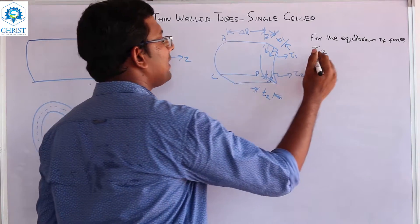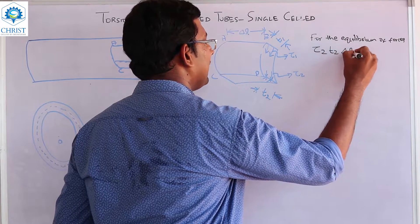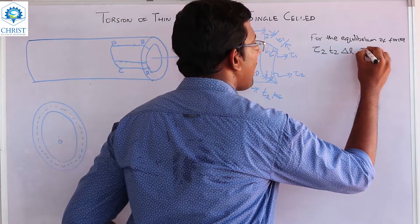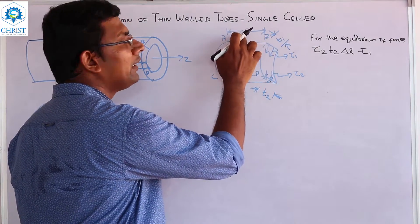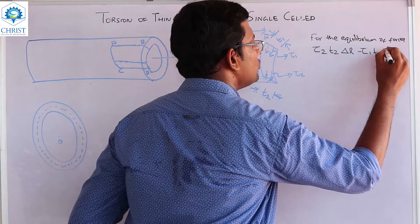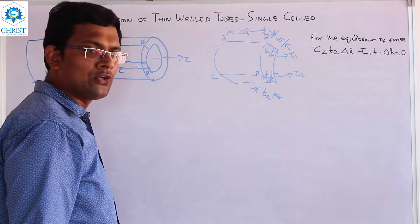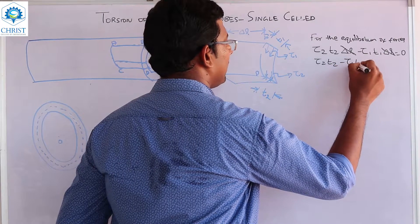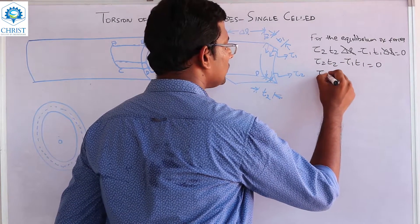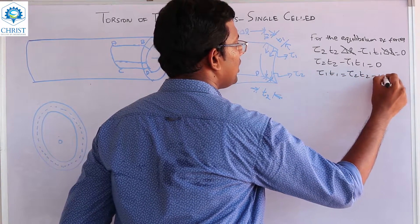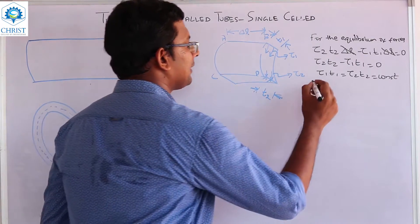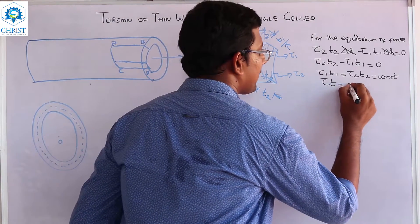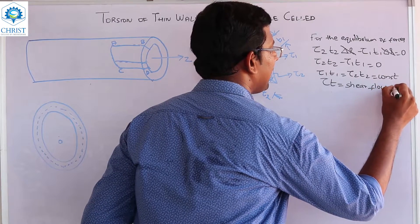The total component is T2 into the active area, equal to T2 into DL. The total force will be equal to T1 into DL. For equilibrium, that value will be equal to zero, so T2 minus T1 equals zero, meaning T1 equals T2, which is a constant. This constant is called shear flow, indicated by the letter Q.